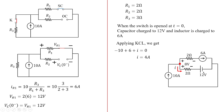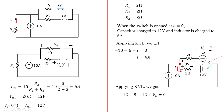R2 has 8 volts in series with the 12 volt capacitor source. Applying KVL in the clockwise direction: minus 12 minus 8 plus 2 multiplied by 6 plus 12 plus VL equals 0. Solving, VL — the voltage across the inductor — equals 8 volts.